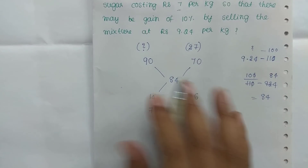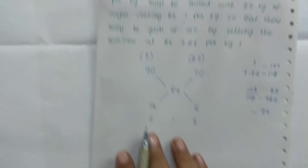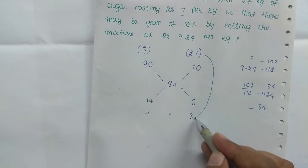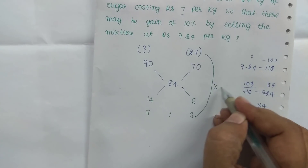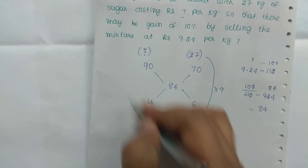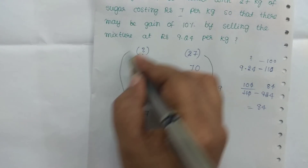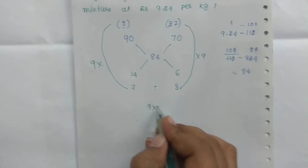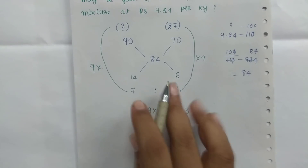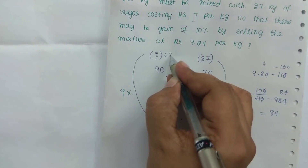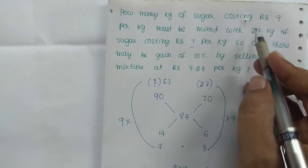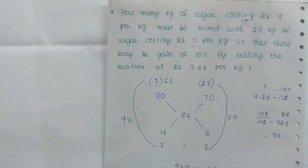But the question is how many kgs of sugar. This 3 is 27 which is into 9. This 3 is 27. So 9 to 9. So 9 × 7 is 63. So in the mixer we'll mix that amount of sugar.